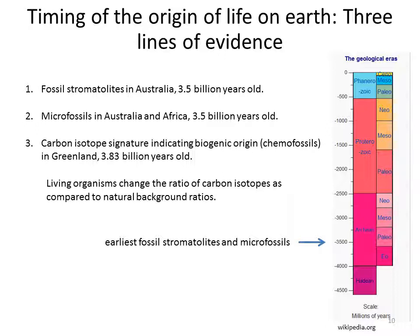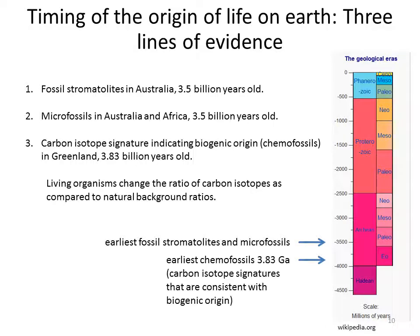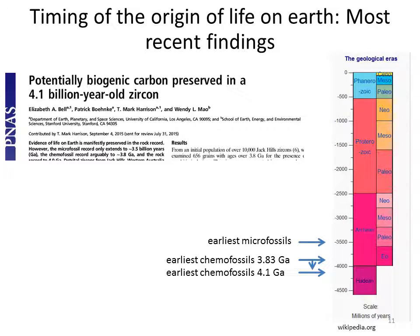The third line of evidence is so-called chemofossils. Chemofossils are specific carbon isotope signatures in rock that indicate a biogenic origin. These biogenic signatures exist because living organisms change the ratio of carbon isotopes as compared to natural background ratios. Until recently, the oldest known chemofossils came from Greenland and were 3.83 billion years old. Very recently, in 2015, a group from Stanford reported on potential chemofossils in 4.1 billion year old rock, potentially moving the origin of life to the late Hadean. So to sum this up, life very likely originated more than 3.5 billion years ago, and there is some evidence that it even originated much earlier.